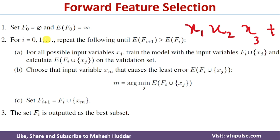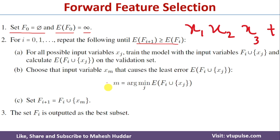There are three steps in forward feature selection. In the first step, we set F0 equal to null, meaning we do not have any features in the subset, and E(Fi) is set to infinity. Next, we start from i equal to 0 up to the number of features, and we repeat steps A, B, C until a stopping condition is true. Once the condition becomes false, we come out of the loop.